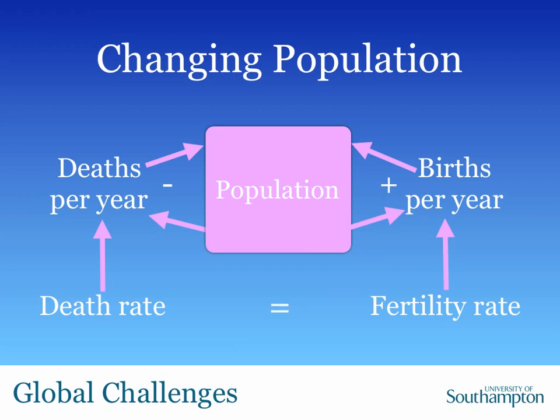When the death rate equals the birth rate, all things being equal, the overall population will vary around a stable level — you won't see change over the timescales you're interested in. When the death rate is greater than the fertility rate, obviously the population starts to decrease, because babies being born aren't sufficient to replace those dying. The inverse happens when the fertility rate is greater than the death rate — then you see growth. This is the mechanism by which there has been exponential growth in the world's population: the fertility rate has led to more people being born than are dying each year.